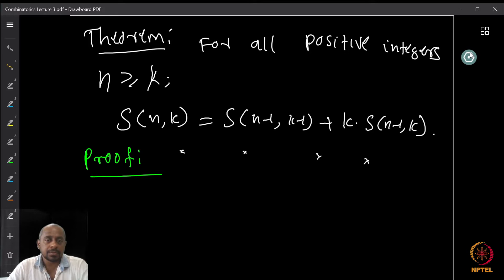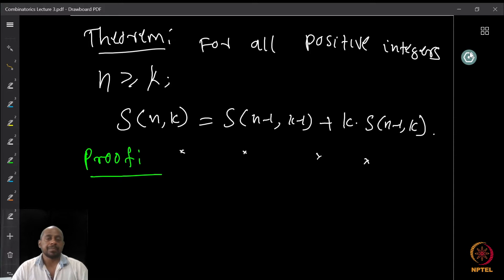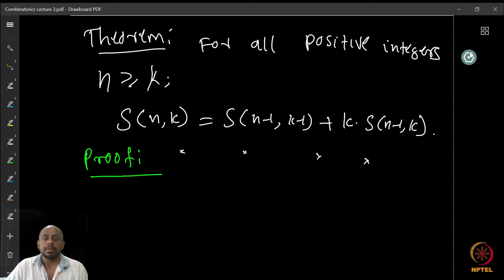So what we want to do is to show the identity S(n,k) equals S(n-1, k-1) plus k times S(n-1, k). To do this we find a bijection between the set of all partitions of an n-element set into k blocks and some other sets — a union of sets.